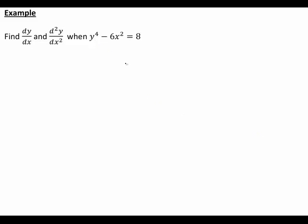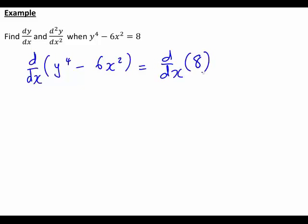So first, let's find the derivative with respect to x of each side of the equation. Since d dx of y to the 4 minus 6x squared will be the derivative with respect to x of 8 in this case.